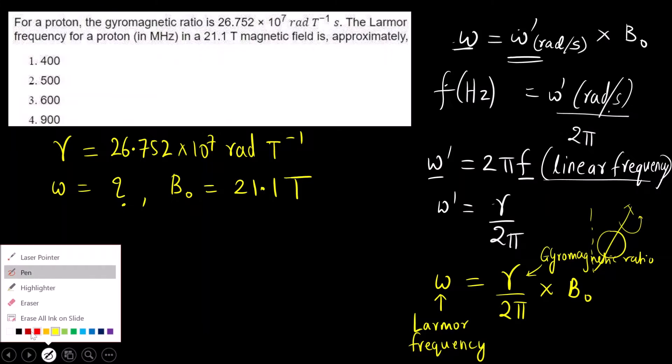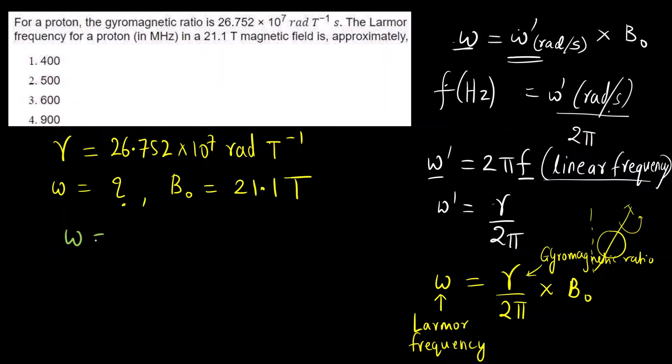Now we can substitute the given values. Everything is given to us. We have to calculate omega, the Larmor frequency. Gyromagnetic ratio is given 26.752 into 10 raised to 7 radian per Tesla into magnetic field, B naught is 21.1 Tesla, divided by when we are dividing it by 2 pi, pi value is 3.14.